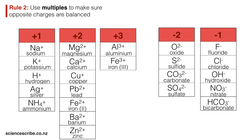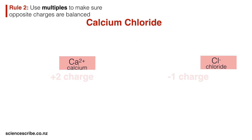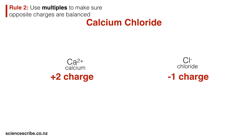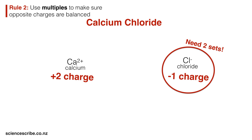Rule number two is that we use multiples to make sure that opposite charges are completely balanced. For example, let's write the ionic formula for calcium chloride. Looking at the table of ions, calcium has a plus two charge, which is not balanced with chloride's minus one charge. This means I need two sets of chloride so that the charges will be balanced. I write Ca for calcium and Cl for chloride, but because I need two lots of chloride, I show a subscript 2 in the bottom right-hand corner of Cl, giving CaCl2.